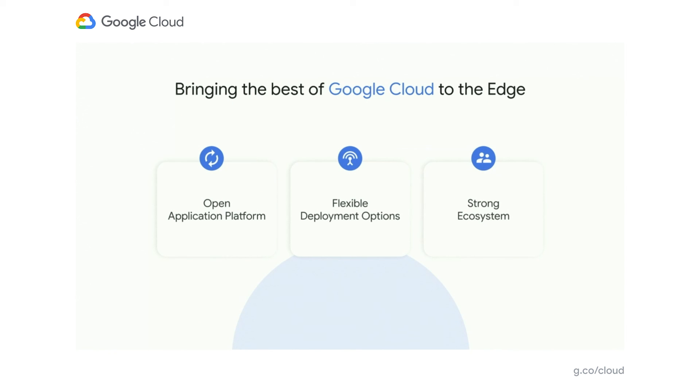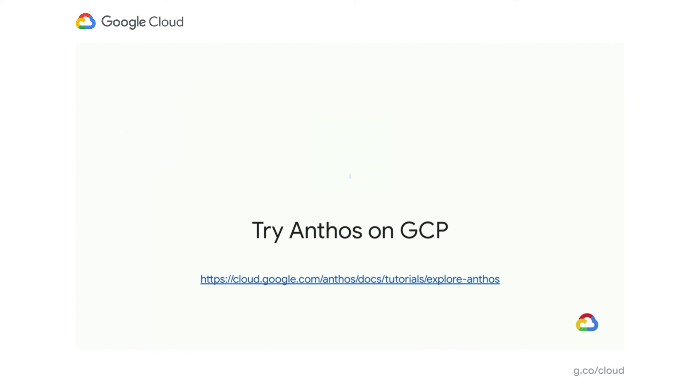Really great to be here today and excited to see what Anthos can offer. As you've seen, the MLB team had a virtualized infrastructure at the edge — the same infrastructure they deploy on the cloud — and are migrating to bare metal. Our goal with Anthos is to bring the flexibility and power of Google Cloud to the edge with an open application platform, flexible deployment options, and a strong ecosystem. I encourage you all to try Anthos on GCP using the link shown, which has tutorials and demos of Anthos capabilities. Thank you all for your time today.